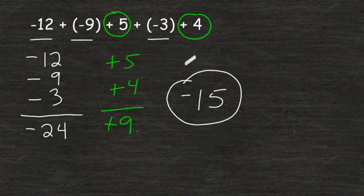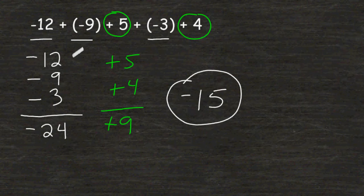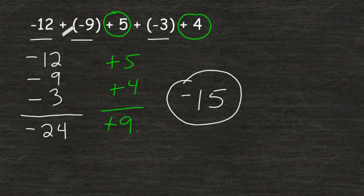Now if you wish, you can just go from left to right. I just showed a different strategy for grouping the negatives and the positives together. Starting at 12 below 0 on the number line and then going backward 9 more would put you at negative 21.